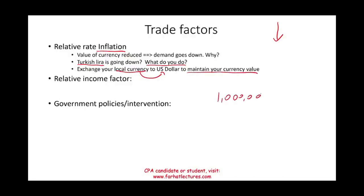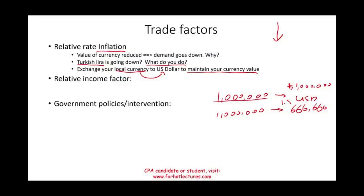For example, if you have one million Turkish lira and today the rate is one dollar, you can get one million U.S. dollars. But if inflation rises and the rate becomes $1.50, your one million lira is only worth $666,000. That's why holders of a depreciating currency exchange it quickly — to avoid losing value.